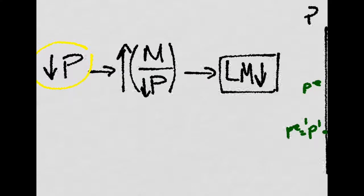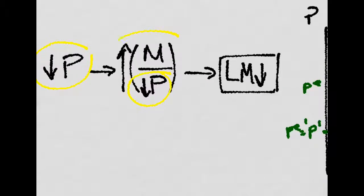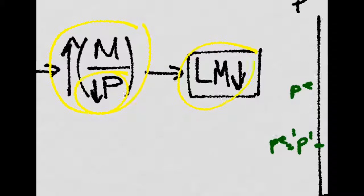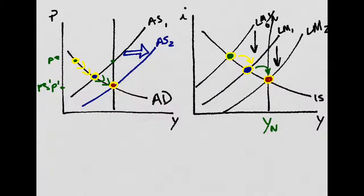But if prices decrease, then the real money stock in the economy increases, and that shifts down the LM. The process goes like this.